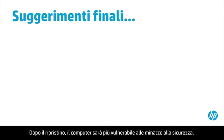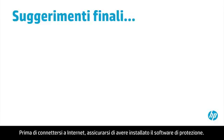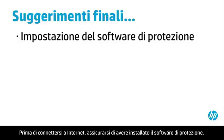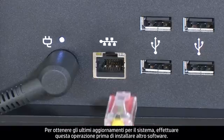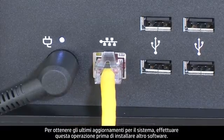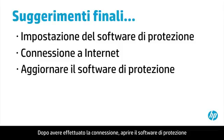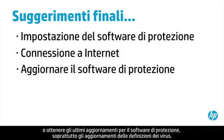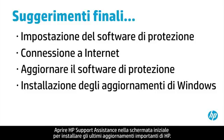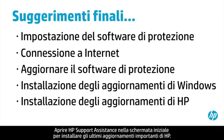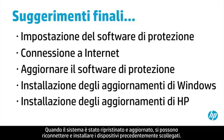After recovery, your computer is more vulnerable to security threats. Make sure you have security software installed before connecting to the Internet. Once your computer is secure, connect to the Internet. Do this before installing other software in order to get the latest updates to your system. After connecting, open your security software and get the latest updates, especially updates to virus definitions. Open the Windows Update tool in PC Settings to get the latest updates for Windows. Open HP Support Assistant on the Start screen to install the latest important updates from HP. Now that your system has been recovered and updated, you can reconnect and install devices that were unplugged previously.